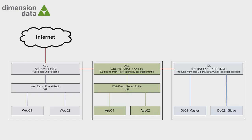The web tier servers will make a RESTful XML request to the application tier, which in turn makes SQL requests to the database servers, and then display the results in the client browser. For this demonstration, we wrote a simple PHP-based app for the web and application tiers. Our database servers are running the popular MySQL server.